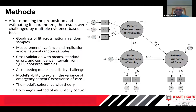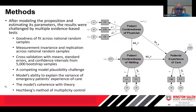Methods: After modeling this proposition and estimating its population parameters, the results were rigorously challenged by goodness-of-fit tests, measurement and variance, and replication tests. In addition, the results were cross-validated with the mean, standard errors, and confidence intervals from an additional simulated 5,000 bootstrap samples. The results were contrasted with a competing model, and the model's ability to explain the variance of patient-centeredness was also examined. The model's coherence with the theory was assessed, and Hochberg's method for multiplicity control was employed.